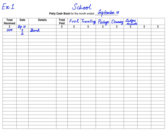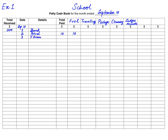On the 2nd of September we paid for petrol at $16 — this is written in the total paid column and also in the fuel analysis column. On the 3rd, J Green's traveling expenses of $23 are recorded in the total paid column and in the traveling column, as J Green is a staff member. Then there is a postage expense of $12 written in the postage column. We can also make a combined column for postage and stationery.